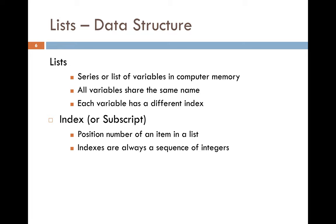A list is a series or list of variables in computer memory. When you say list, it's like a collection or a group. In our previous example we had several examination marks that we want to store — for that we use a list. In computer memory, you normally store one data value in one variable, but a list lets you store many items.